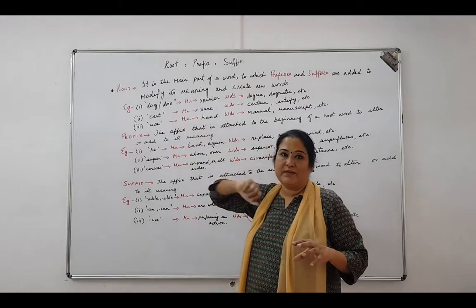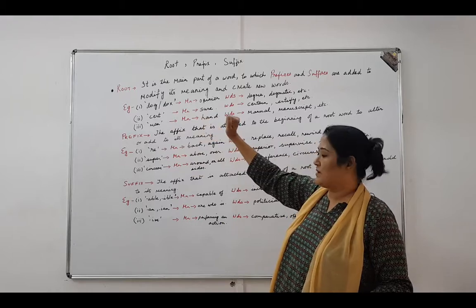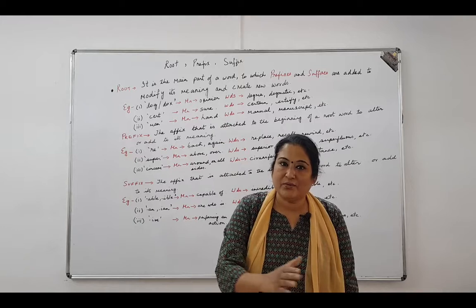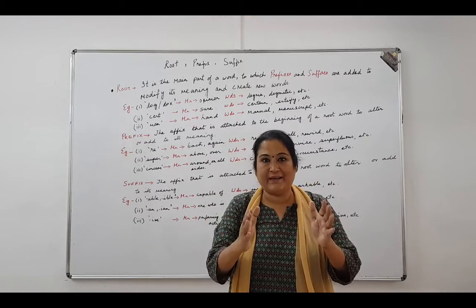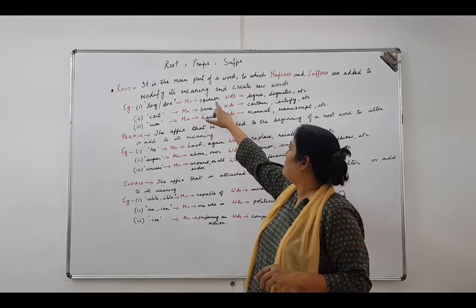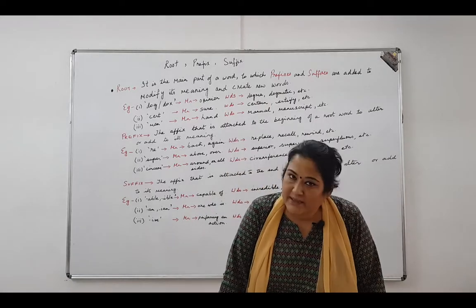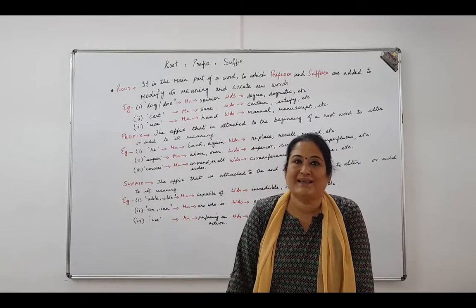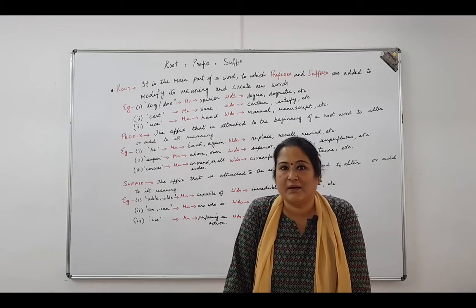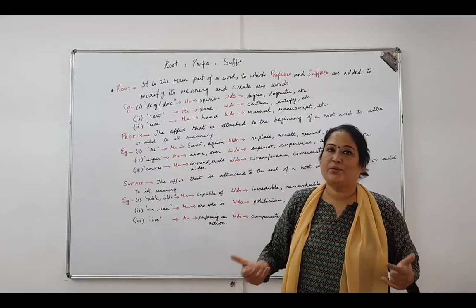Now let's look at examples of root words. We have picked up three examples. The first one is 'dog' or 'dogs', which means opinion. So words that come from this root will naturally have something to do with opinion. The first word I have picked up is 'dogma'. Now what is dogma? A set of established beliefs. So in today's world, some of the traditional dogmas are no longer relevant — meaning a set of established beliefs which was relevant in the past is no longer relevant today.